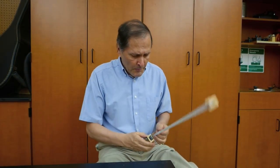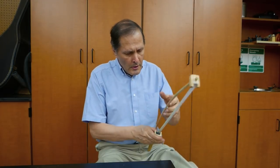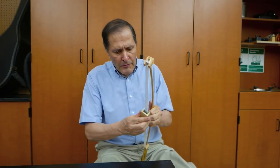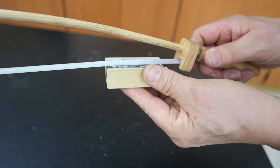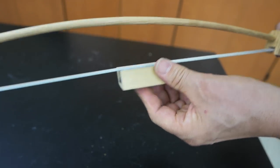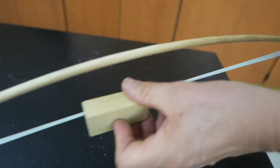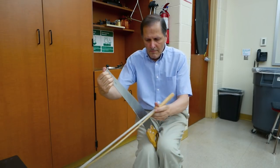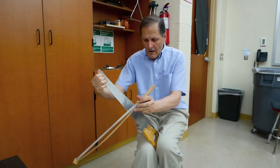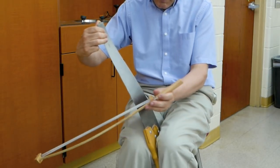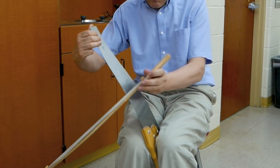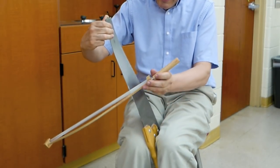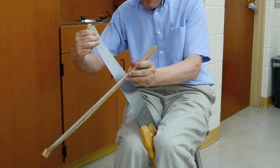Alright, now that our bow is done, let's apply some rosin to it. I'm going to hold the strings and simply rub this across it. Now let's see if it works. That works pretty good.